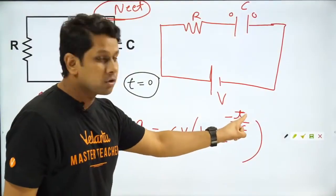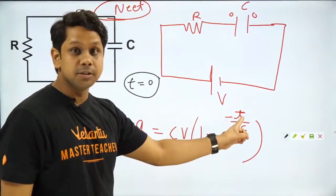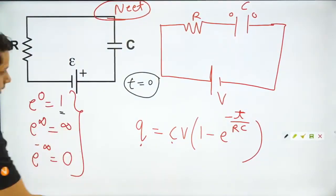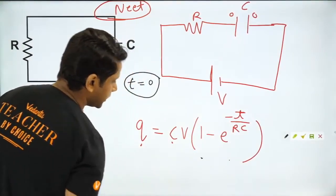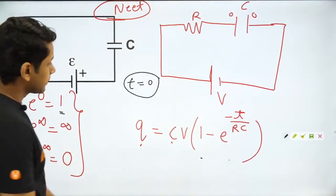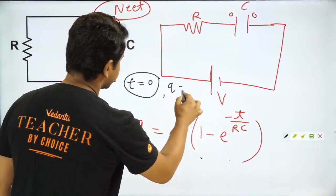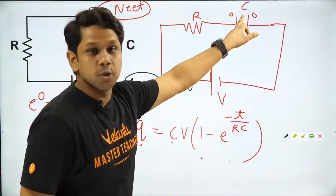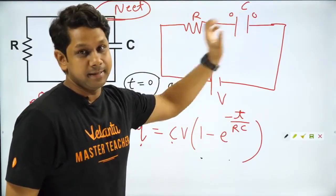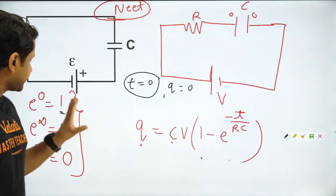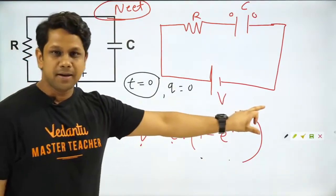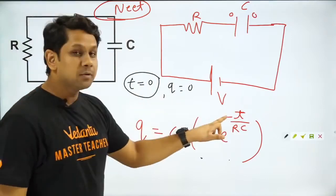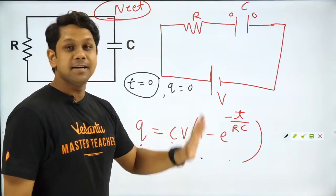तो अगर आप यहाँ पे t = 0 रखो, तो e^0 = 1 बन जाएगा, तो 1 − 1 = 0 — charge zero आएगा। यह equation बिल्कुल सही satisfy करता है बच्चो, और यह हमें पहले भी पता था कि t = 0 पे कोई भी charge नहीं है। तो ऐसे आप कोई से भी time की value यहाँ पे डाल के charge calculate कर सकते हो।